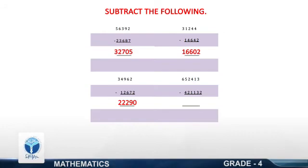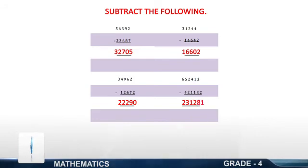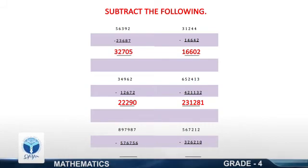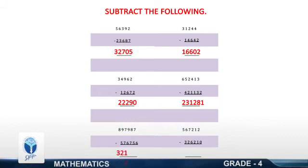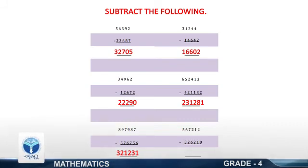652,413 minus 421,132. Your answer is 23,281. Next: 897,987 minus 576,756. Yes, your answer is 321,231. Next: 567,212 minus 326,210.